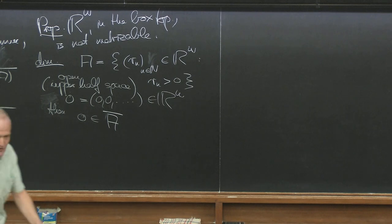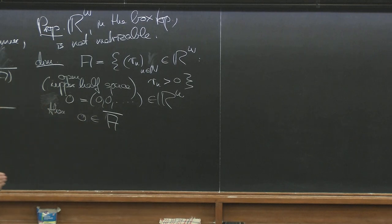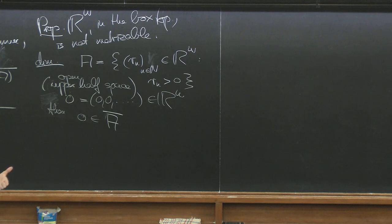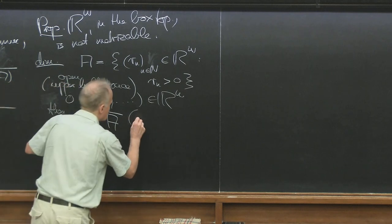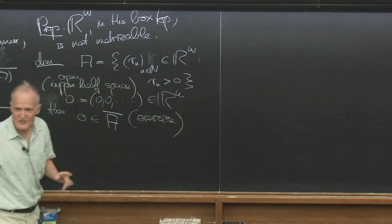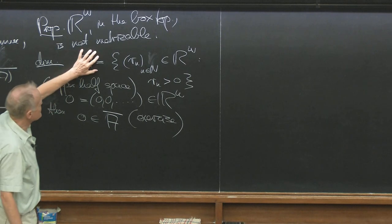Now we prove there is no sequence in A converging to zero. The sequence lemma then says R^ω cannot be metrizable, otherwise we'd have such a sequence. So let A_n = (R_{1n}, R_{2n}, ...) be any sequence in R^ω with all coordinates positive, so A_n is a sequence in A.